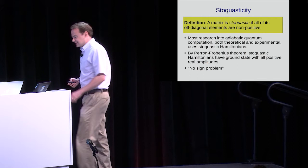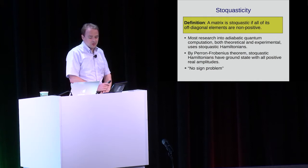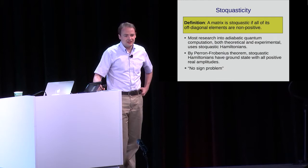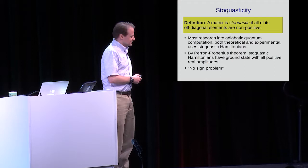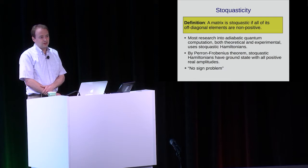The central topic of this talk is stoquasticity. A matrix is stoquastic if all of its off-diagonal elements are non-positive. Most research into adiabatic quantum computing, both experimental and theoretical, focuses on stoquastic Hamiltonians. And by the Perron-Frobenius theorem, we know that stoquastic Hamiltonians have a ground state which can be expressed using all real positive amplitudes.